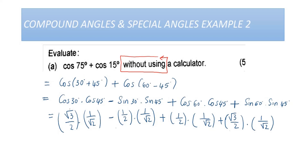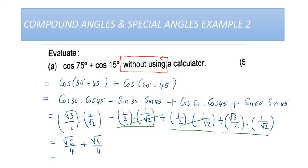We can see that −1/2 × 1/√2 and +1/2 × 1/√2 cancel as like terms. We're left with √3/2 × 1/√2 plus √3/2 × 1/√2, which is √6/4 + √6/4, giving us a final answer of √6/2.